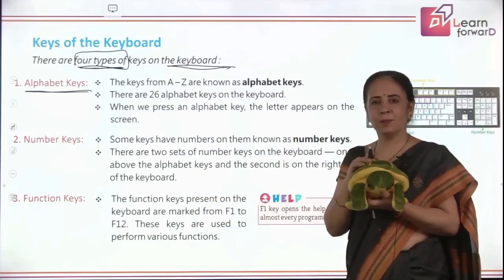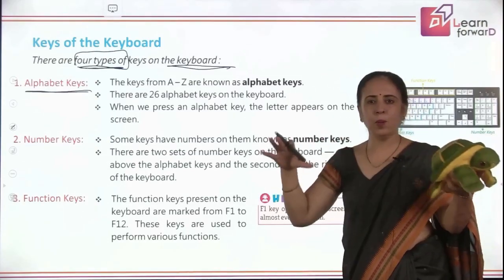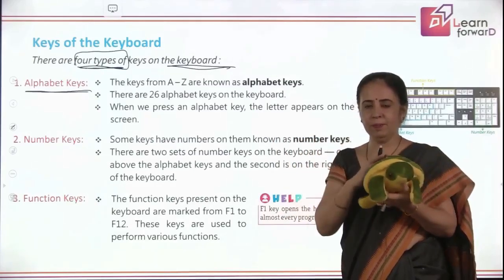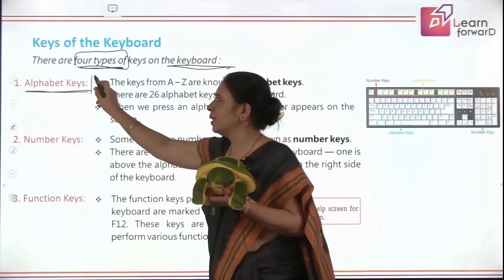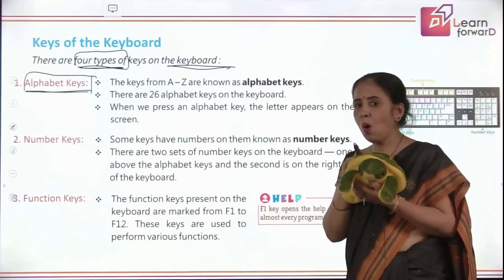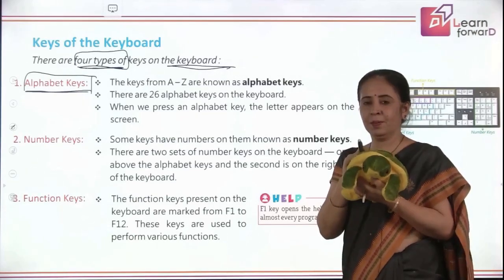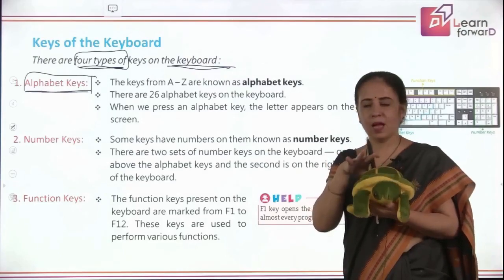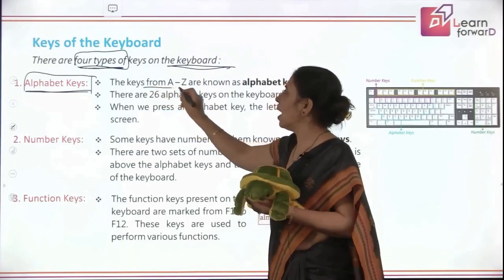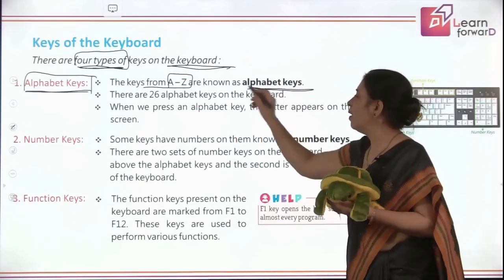Do you know alphabets? A, B, C, D — these are the alphabets. On the keyboard, in the center, we have all the alphabets and these keys are called alphabet keys. Do you know how many alphabets there are in all? 26! So all 26 alphabets are there on the keyboard, from A to Z, and we call them alphabet keys.